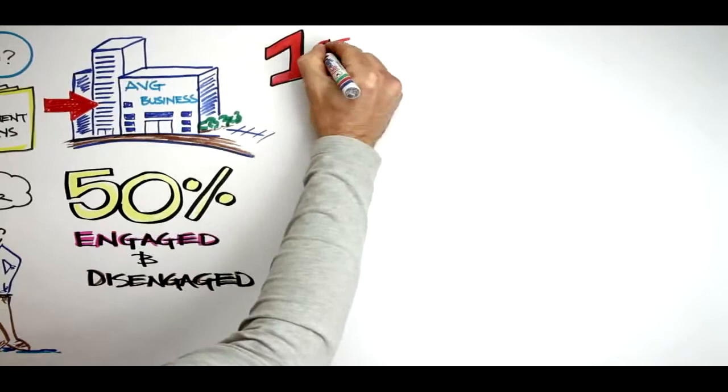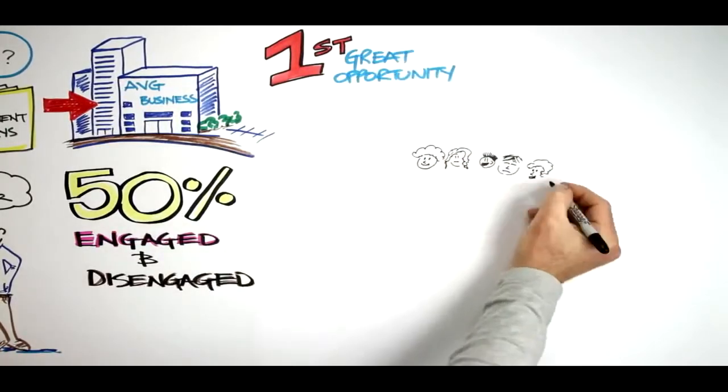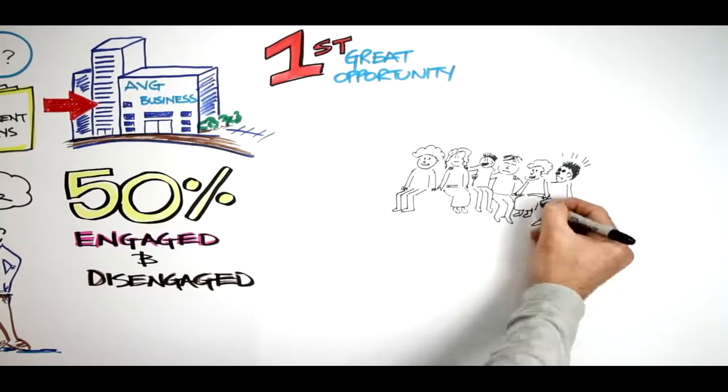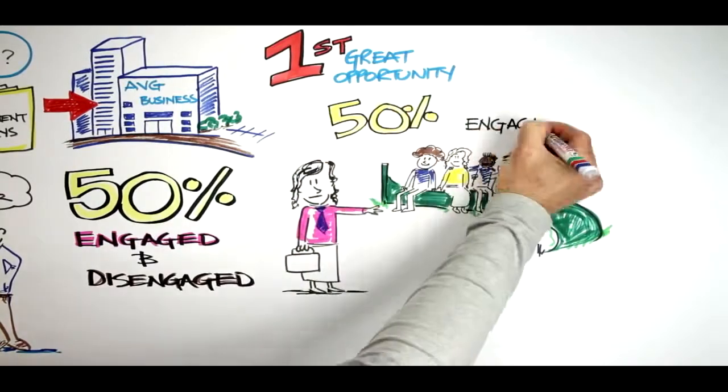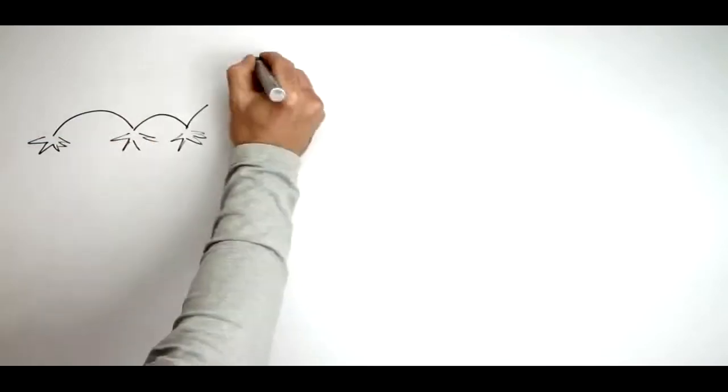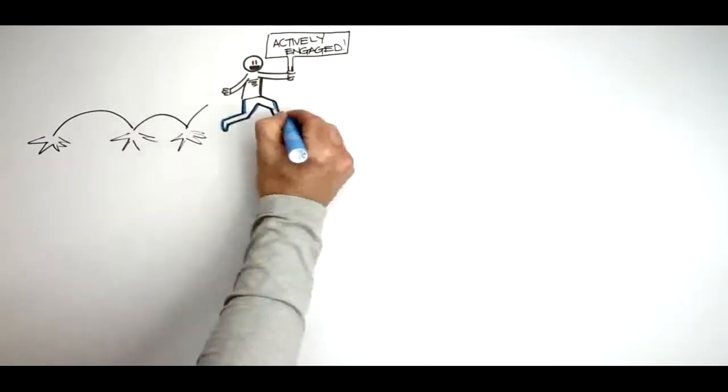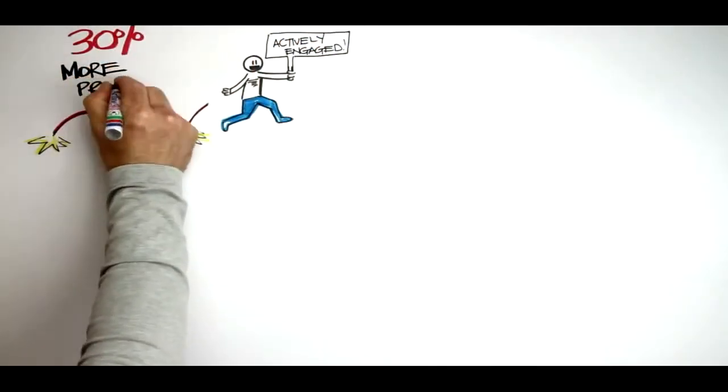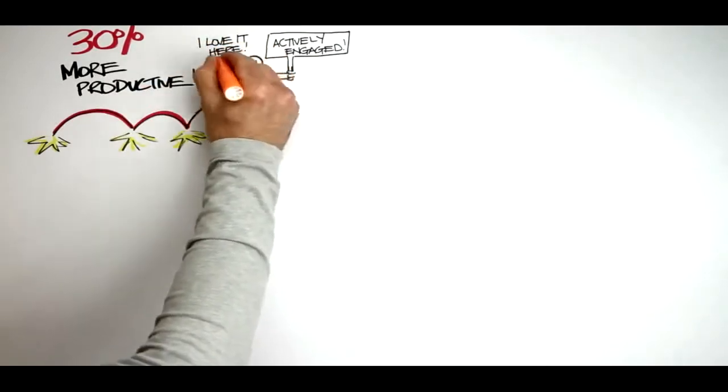This is a leader's first great opportunity. The remaining 50% sitting on the fence, waiting for a leader to engage them. I call this the leader's sweet spot. An actively engaged team member is around 30% more productive than a fence sitter, and retention is dramatically improved.